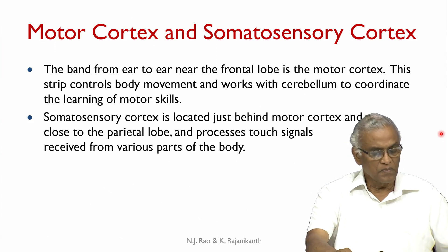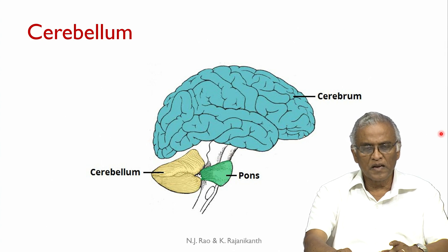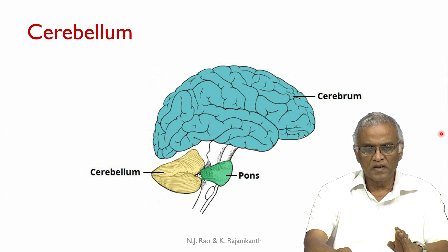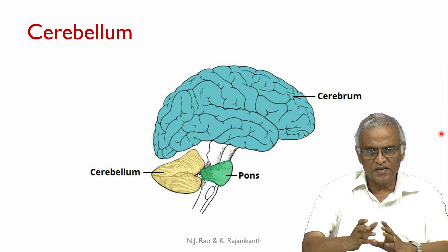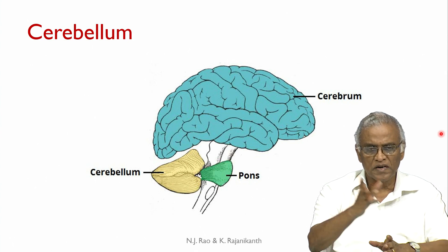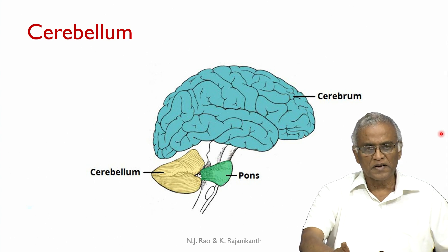That is the overall organization of the cerebrum. Now, the cerebellum — it is below and at the back side of the cerebrum and touches the brain stem. The connection through the pons acts as a kind of traffic signal; there are several nerves routed to various parts of the brain.